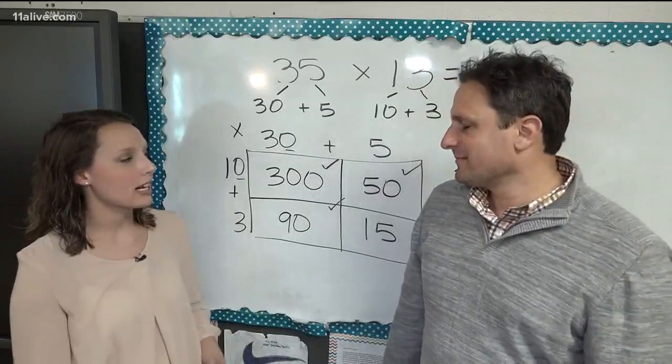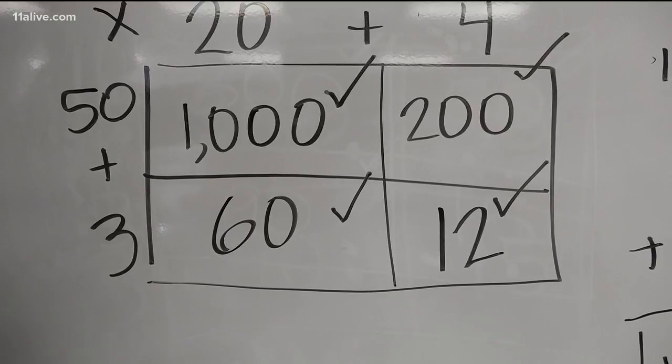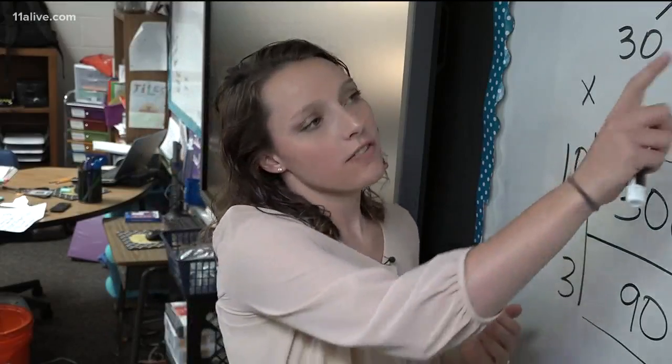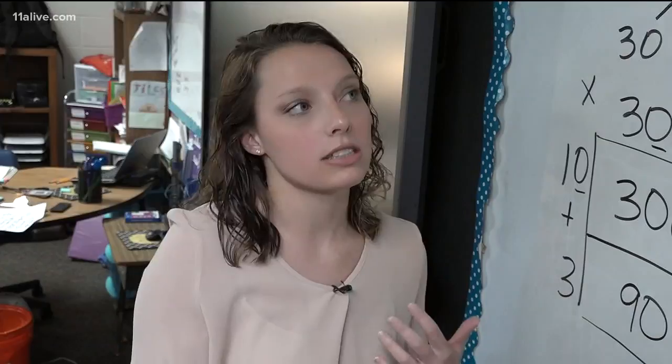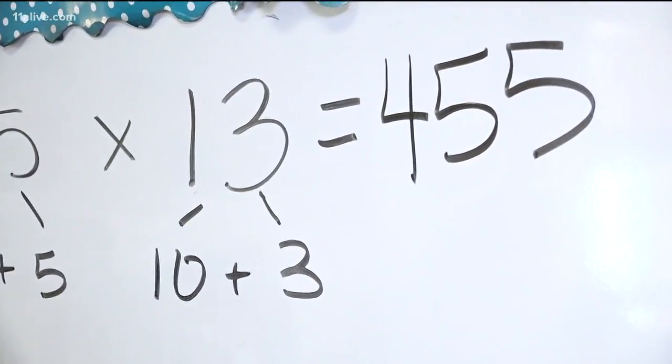Because they don't understand the concept. Conceptually understanding the number sense that goes along with it. 35 times 13 is not just numbers and placeholders. This actually means 35, 35 groups of 13.